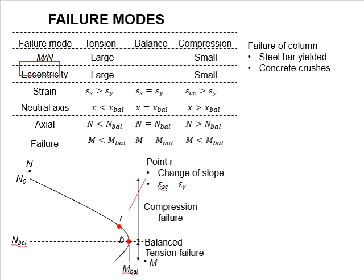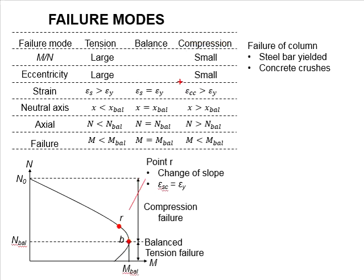In terms of the eccentricity of the load, large eccentricity acting on the column leads to a high moment, which encourages tensile failure. In terms of strength, when the tensile steel stress exceeds the yield strength of the steel, tensile failure occurs. As for compression, when the strength of the steel in compression exceeds the yield strength limit, compression failure can happen.